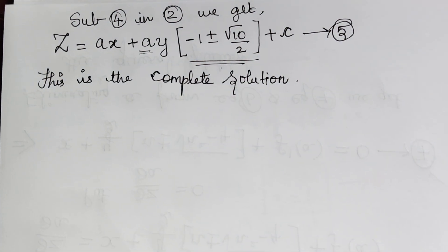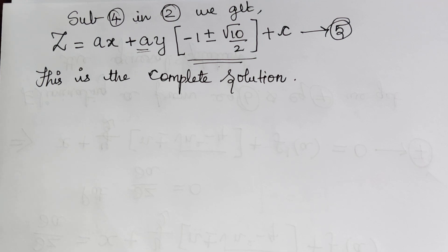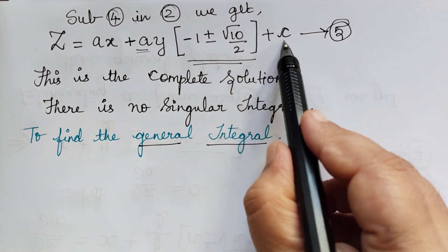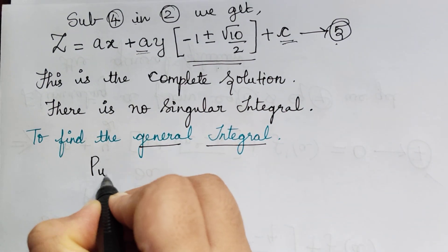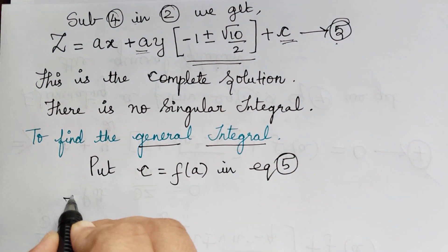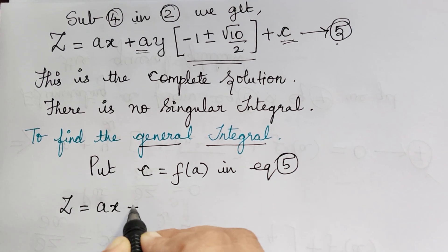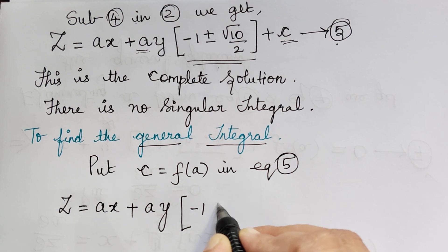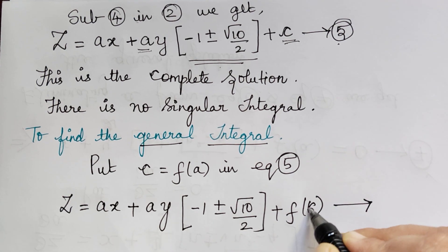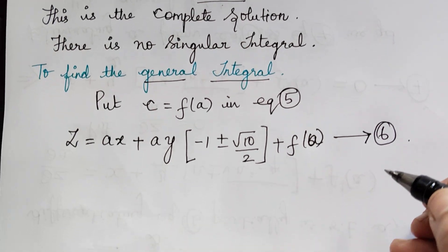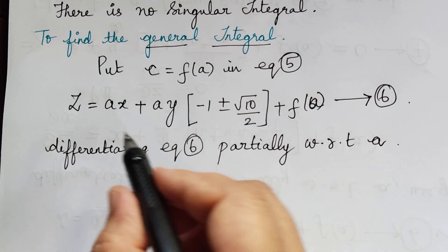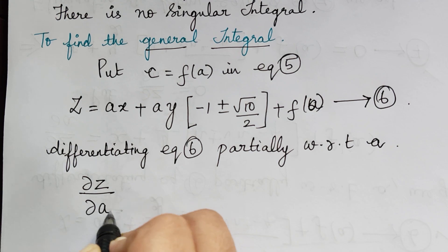We also know that there is no singular integral for problems of the type f(p, q) = 0. In order to find the general integral, we put c = f(a) in equation 5. Doing so, we obtain z = ax plus ay times (negative 1 plus or minus √10 divided by 2) plus f(a). Mark this as equation 6. After this, we differentiate equation 6 partially with respect to a.